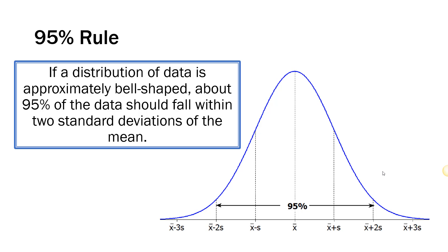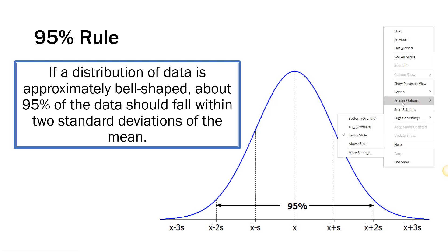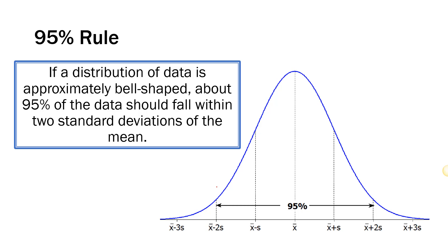We can also use the 95% rule to approximate the standard deviation from a histogram. The way we do that is if our histogram is bell-shaped symmetric — if we smoothed it out, it would look like a bell curve. I look at my histogram and cut off a little bit on either side. Here's the minus two standard deviations mark and here's the plus two standard deviations mark.